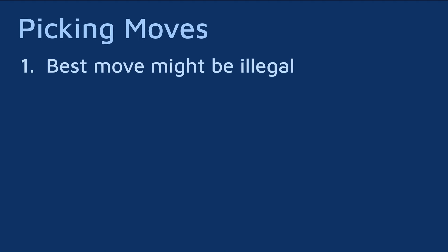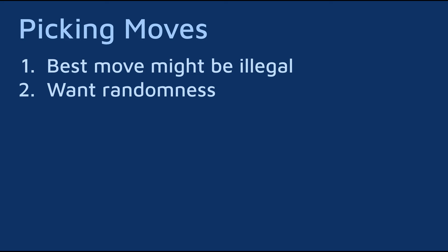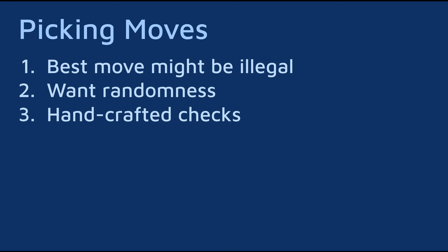The last thing, before getting to the results, is how to pick a move. It's not as straightforward as just taking the highest probability position from each output feature map. What if the best move by the network is actually illegal? Also, what if we want to insert some randomness into the process so if it plays versus itself, the game will be different every time? Also can we improve it a bit using some hand-crafted functions?